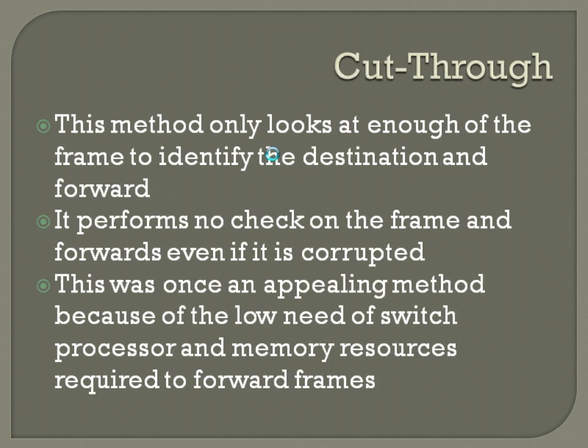The cut-through method is kind of a complete foil to store and forward. This method only looks at enough of the frame to identify the destination and then forwards it out. It performs no check on the frame, and even if it's a corrupted frame, it still gets forwarded. This was once an appealing method because of the low need for switch processor and memory resources, which were rare or expensive at the time, but since those resources are no longer at such high value, this is no longer used quite as frequently.